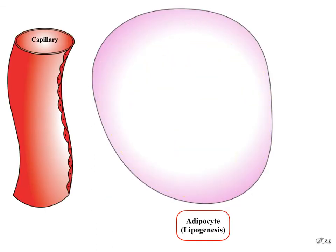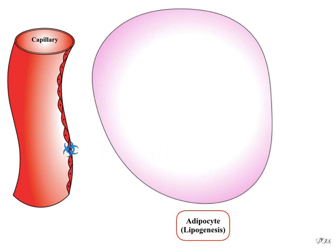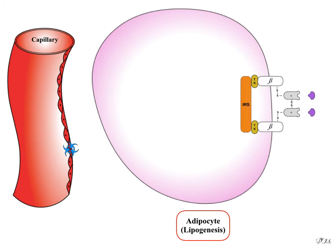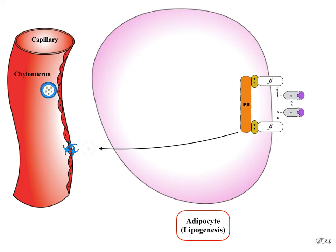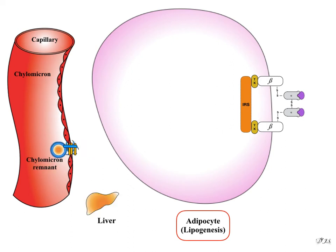Lipogenesis: lipoprotein lipase (LPL) is synthesized by the adipocyte and anchored to the capillary wall. Insulin increases lipoprotein lipase activity, which facilitates the breakdown of chylomicrons and other low-density lipoproteins into free fatty acids, which can then be absorbed. The increase in cellular free fatty acids increases triglyceride formation and formation of lipid droplets.